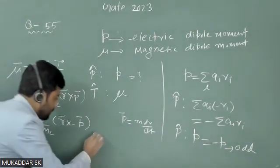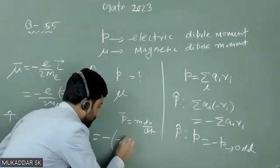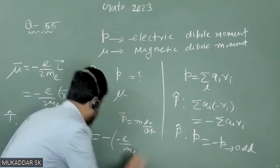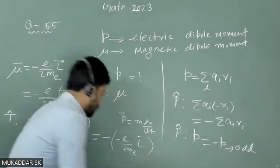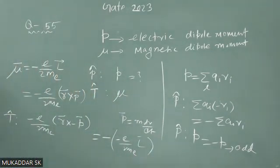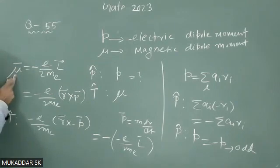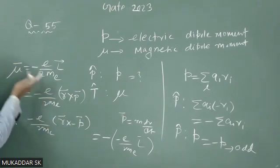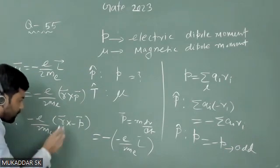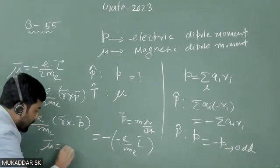So we have minus of minus e over 2m times L. There is a linear relationship between L and mu. Under time reversal, L will become minus L, because L equals R cross P and P changes sign. Therefore, mu will become minus mu. So mu clearly gets a minus sign under time reversal.